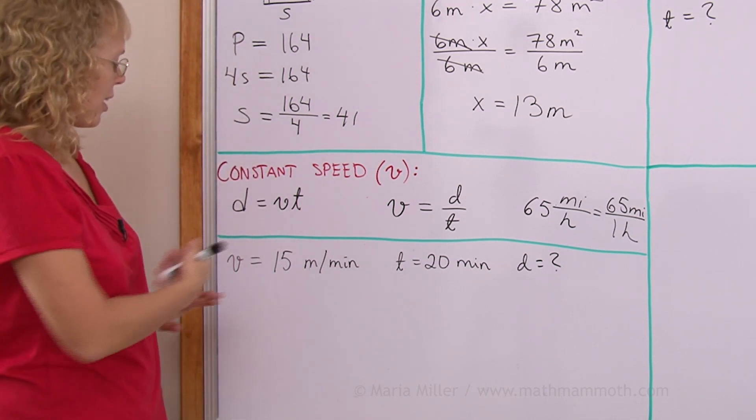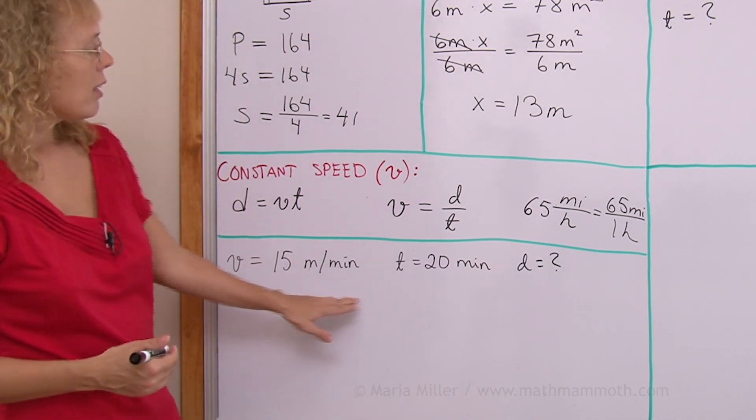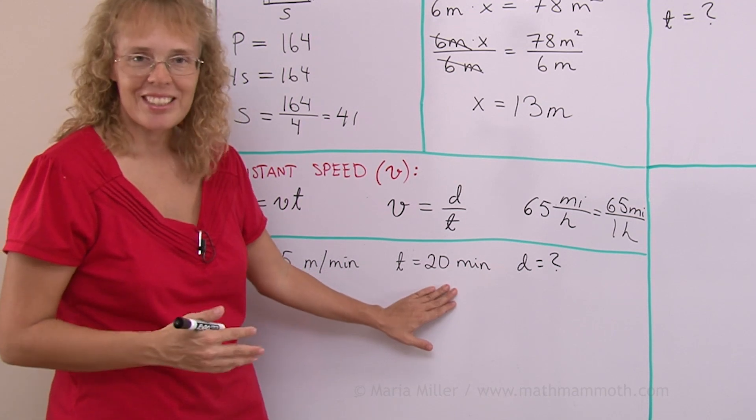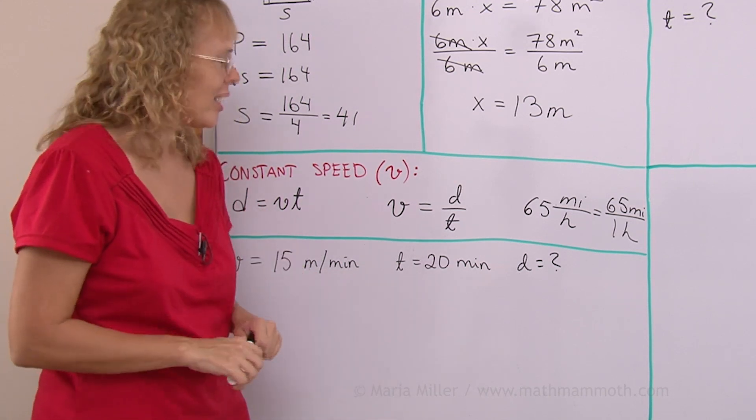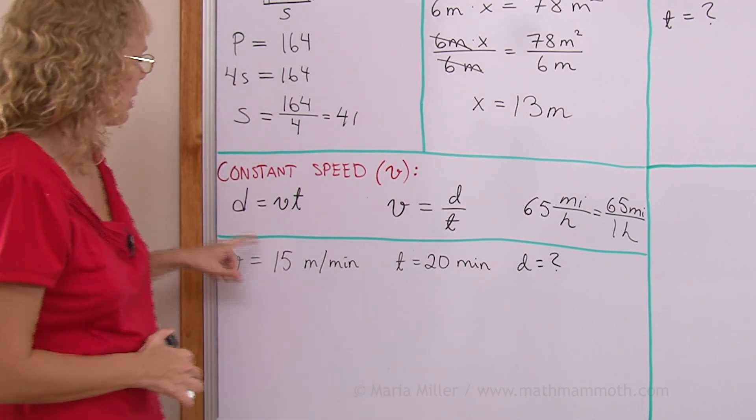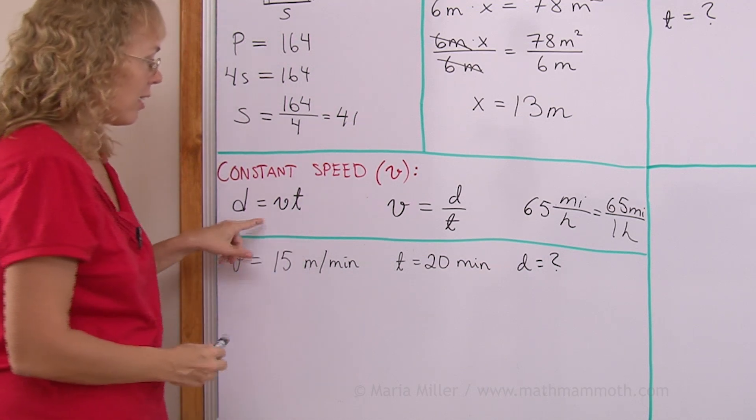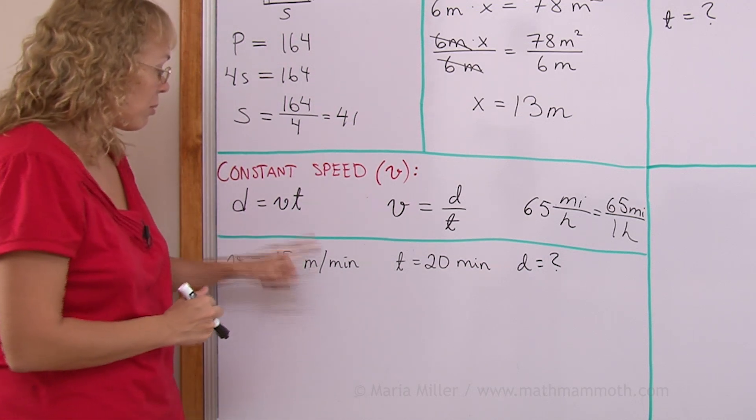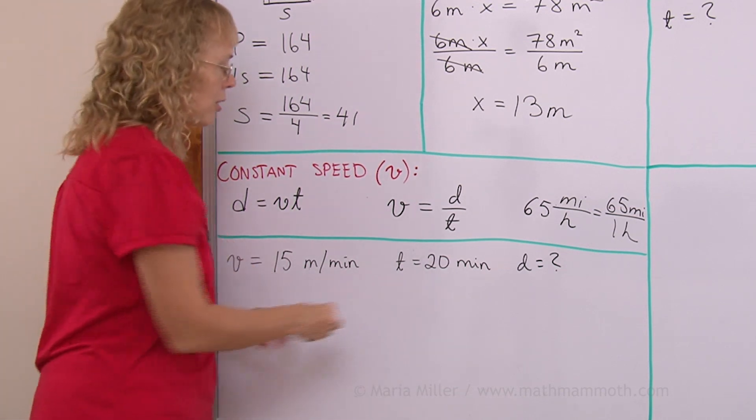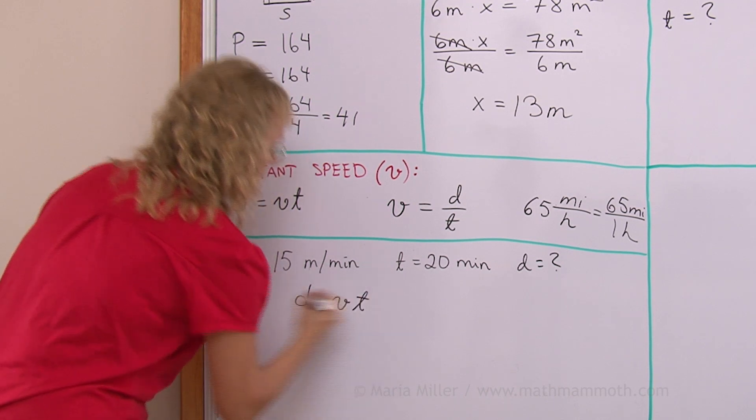Let's say that some animal is speeding with constant speed of 15 meters per minute. And they go about doing that for 20 minutes. They travel for 20 minutes. What distance did they travel? Distance is an unknown. I could use this one because it tells me distance is that. So let me write this equation here. I'll copy it here. And then we will fill in these numbers that we know.